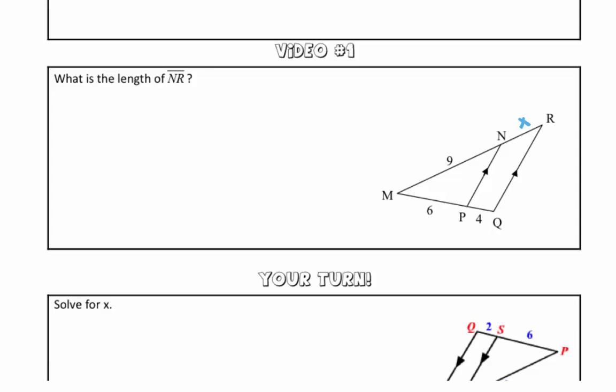If we go ahead and take a look at this example, we really have two triangles in this diagram. And I'm just going to redraw them over here. So we have triangle MPN, and we have triangle MQR.